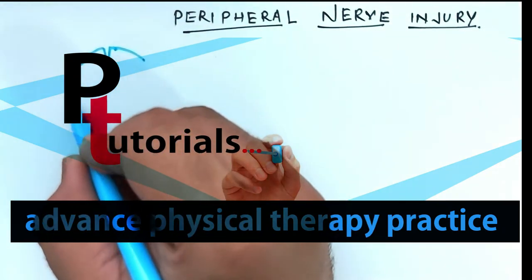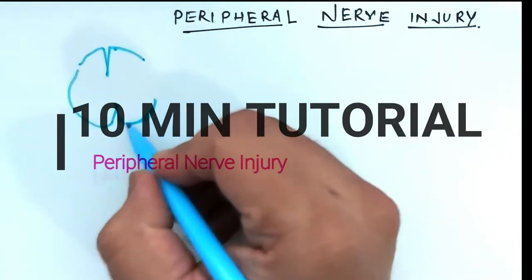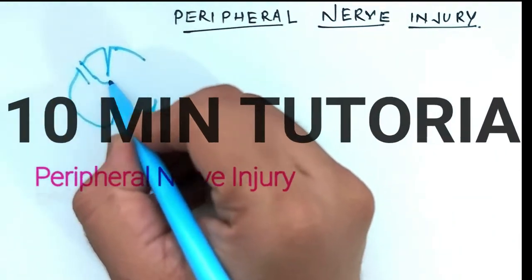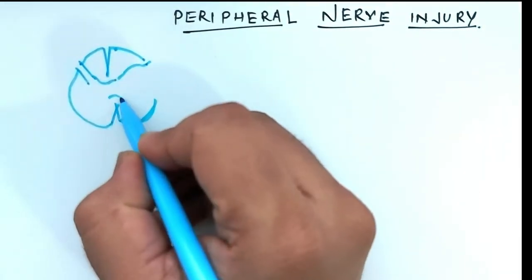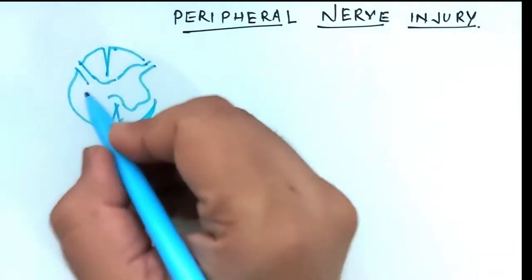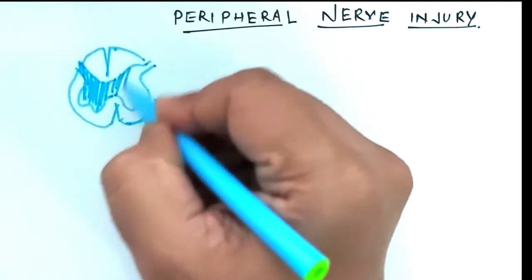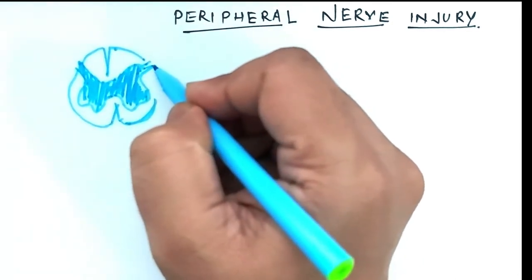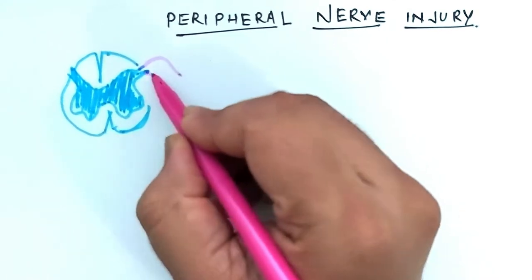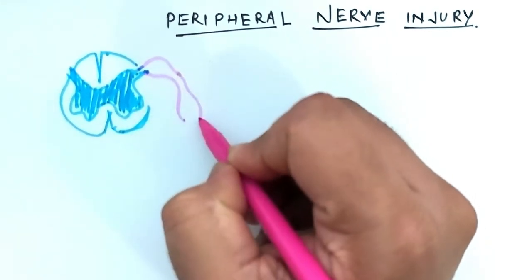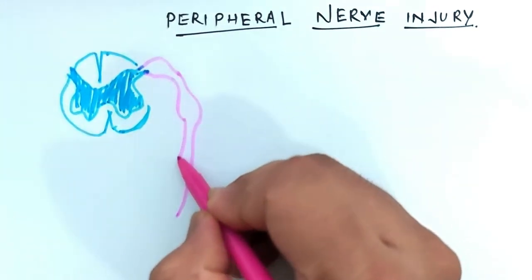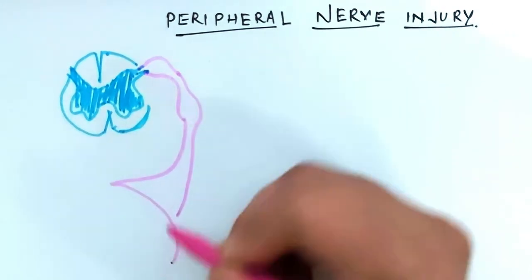Hello everyone, welcome to the physiotherapy tutorial channel. In this 10-minute tutorial series we are going to talk about peripheral nerve injuries. Peripheral nerves are categorized under the peripheral nervous system. This nervous system connects the central nervous system, that is the brain and spinal cord, to the rest of the body.